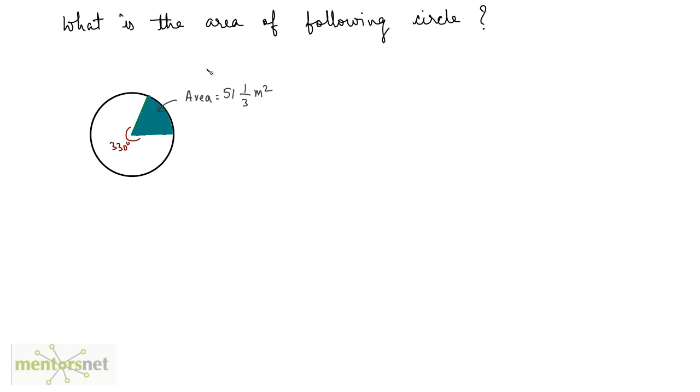What is the area of the following circle given here? Now you have been given the area of a sector. So let's write the formula for that. Area of a sector is equal to theta by 360 times pi r square. Now what is pi r square? Pi r square is the area of a circle and that is what we have to find.